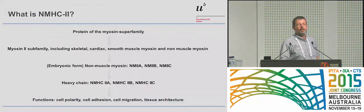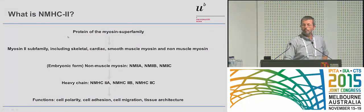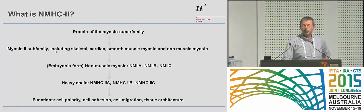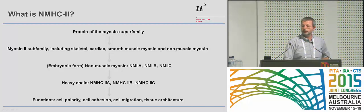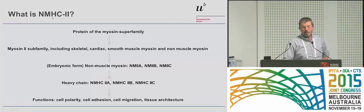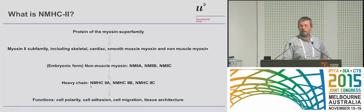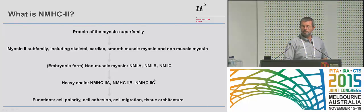So what is NMHC2? It is a protein of the myosin superfamily, myosin 2 subfamily, which includes skeletal, cardiac, smooth muscle myosin, and non-muscle myosin. The NMHC2 is an embryonic form of non-muscle myosin, and we are looking at the heavy chain of this, and there are three subtypes: NMHC2A, B, and C.